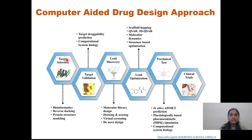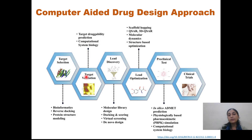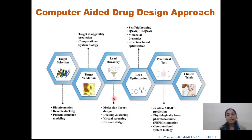First, we will see target selection. In target selection, if a crystal structure is available, we will take it as such. If a crystal structure is not available, we will go for reverse docking or homology modeling. We will then validate the target using multiple software tools like RAMPAGE, ProSA, and PROCHECK. Once we identify and validate the target, we will find lead compounds using multiple databases such as ZINC15. We will take ligands from those databases, perform docking, and based on the docking score, select some lead compounds.